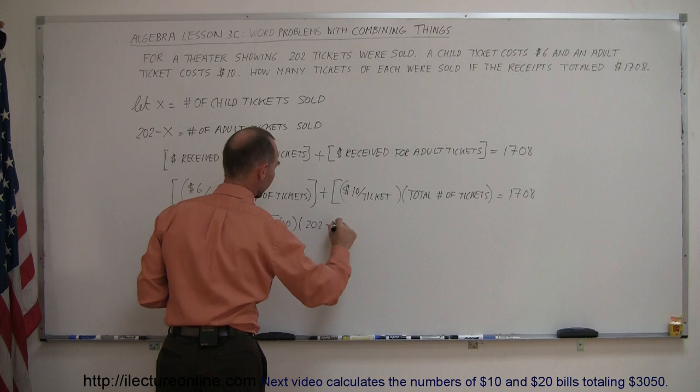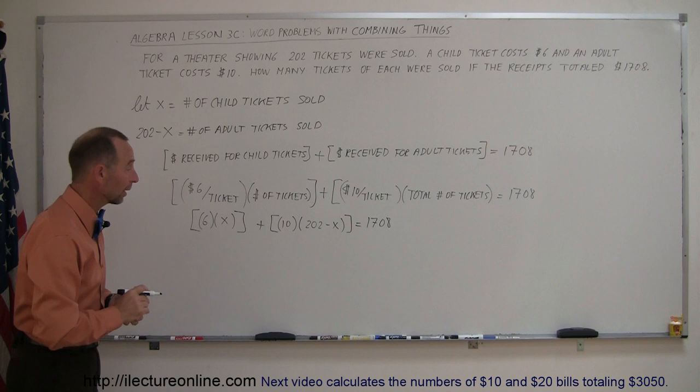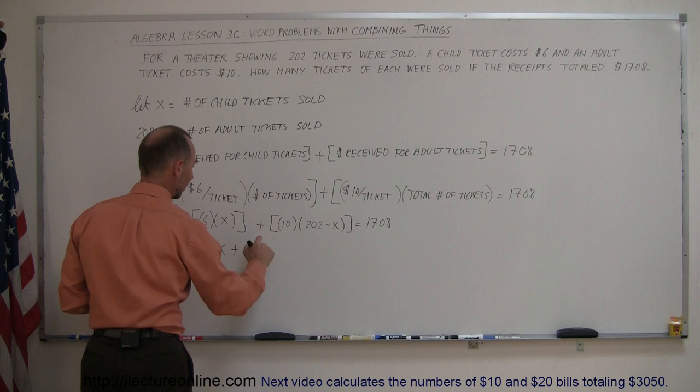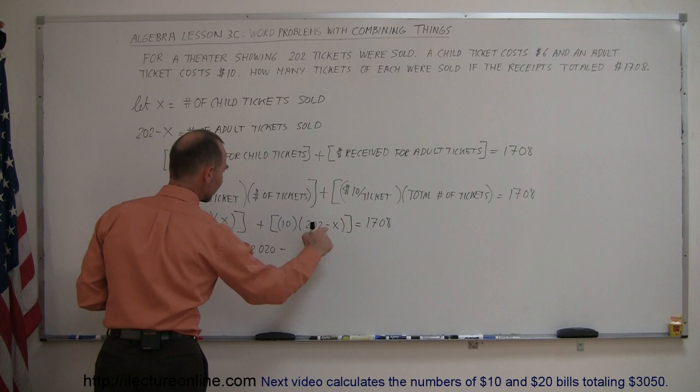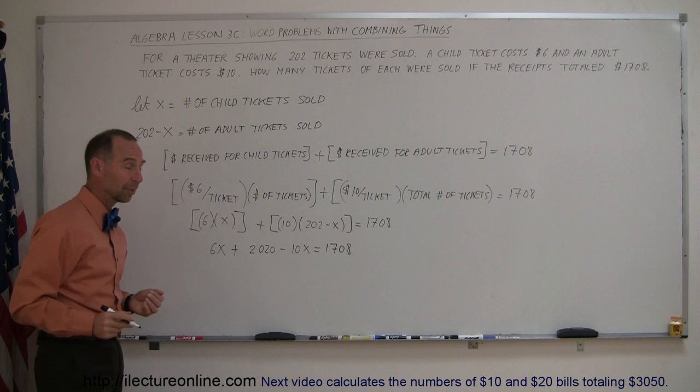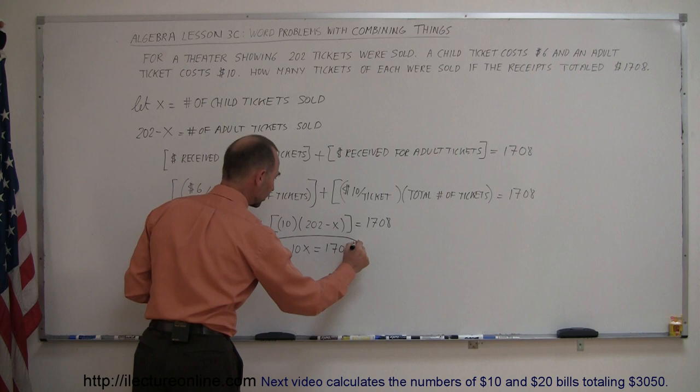Now we're ready to solve this equation. Simplifying things, this is 6X plus 10 times 202 is 2020 minus 10 times X is minus 10X, and that equals 1,708. The next step is to move all the X's to one side, everything else to the other side.